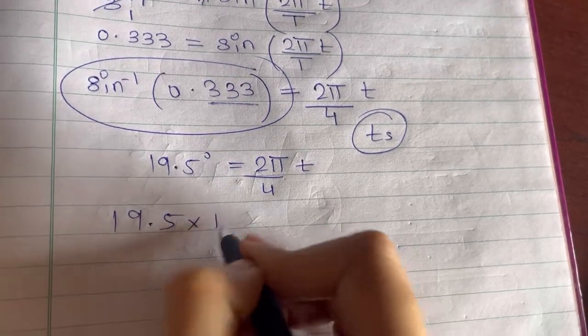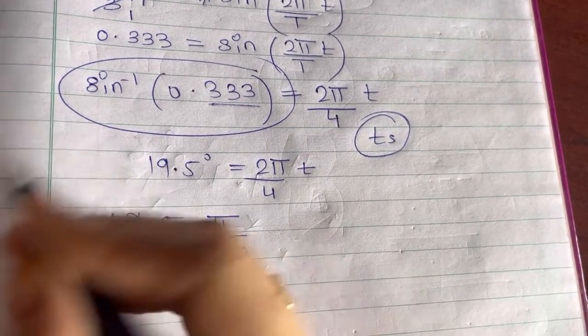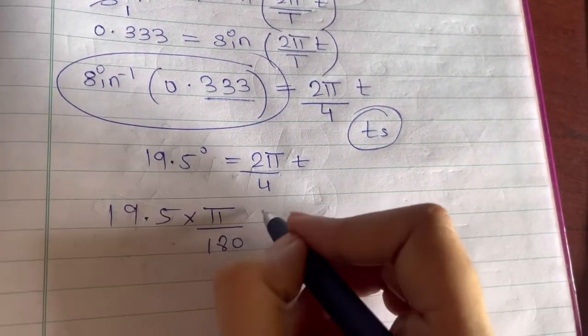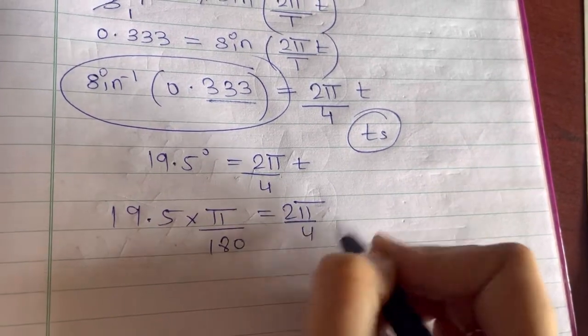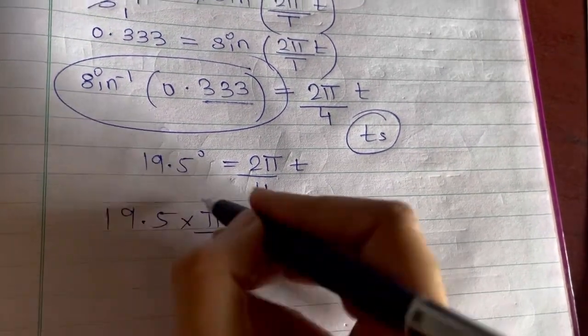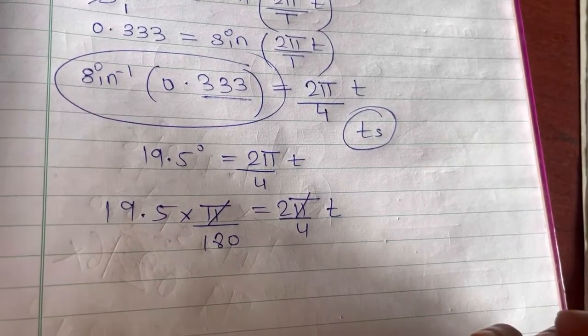So 19.5 into pi upon 180. Now this is in radians. So that is 2 pi upon 4 and this t over here. This pi and this pi will obviously get cancelled.